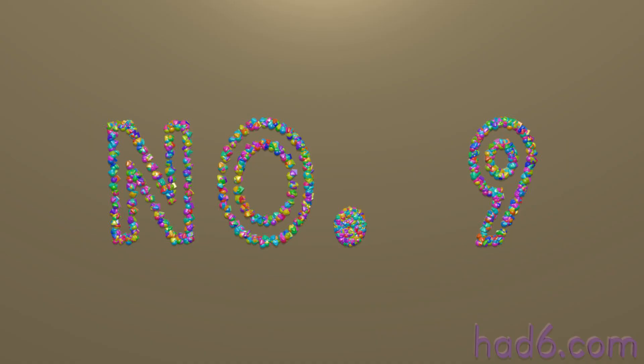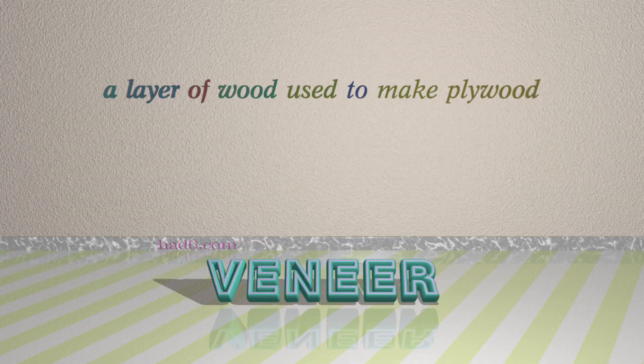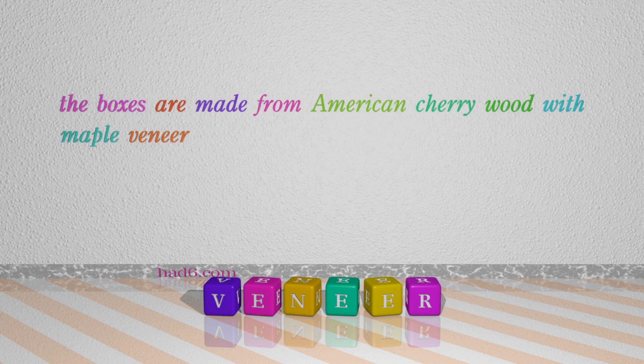Number 9: Veneer. Which means a layer of wood used to make plywood. For example: The boxes are made from American cherry wood with maple veneer.